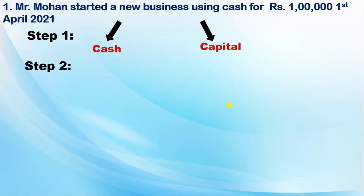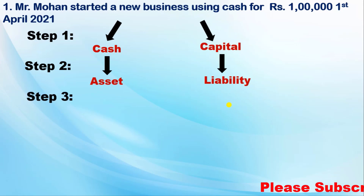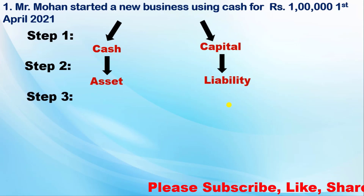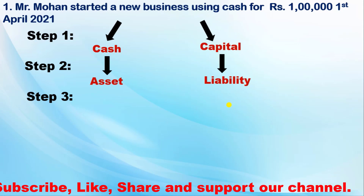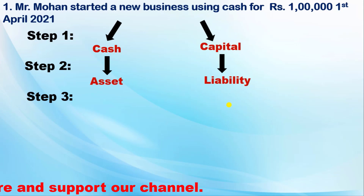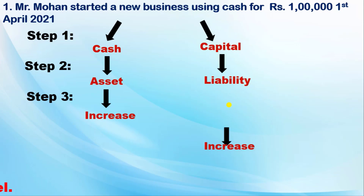After identifying the accounts, step 2 is to know the type of each account. Cash is an asset, and capital is a liability. Step 3 is to check whether the balance of your assets and liabilities is increasing or decreasing. Here, Mr. Mohan started the business using cash, so cash in the business is increasing — meaning your asset cash is increasing — and capital, which is a liability, is also increasing.